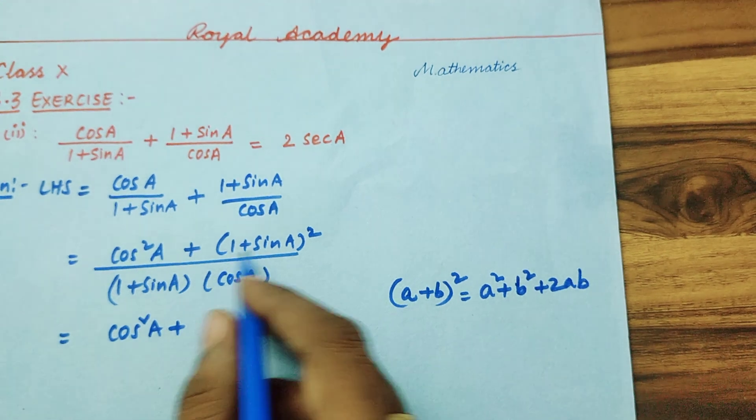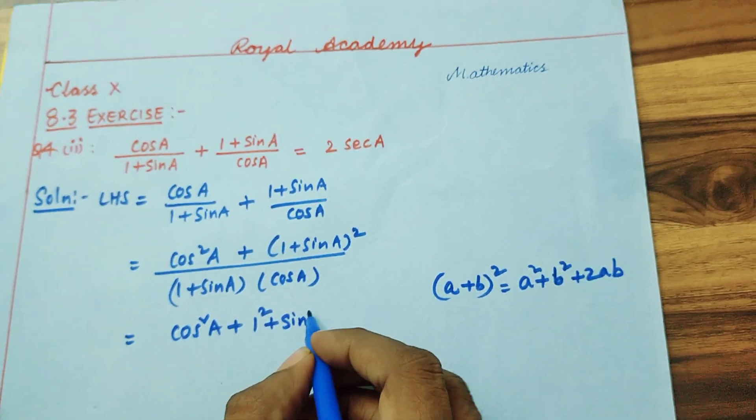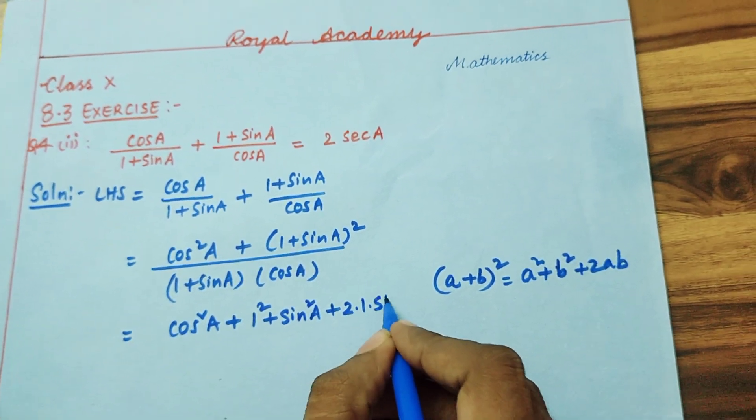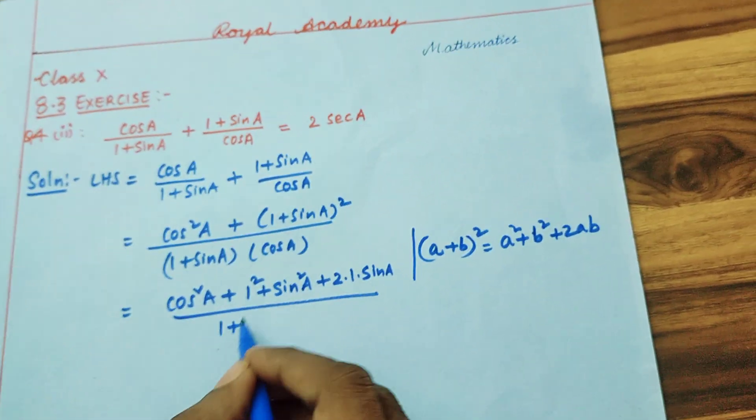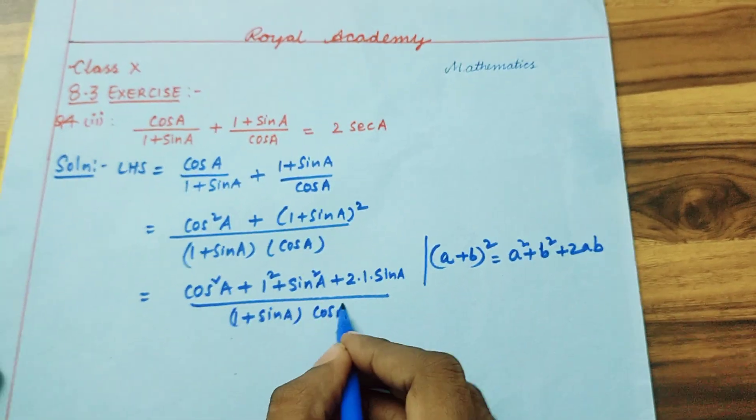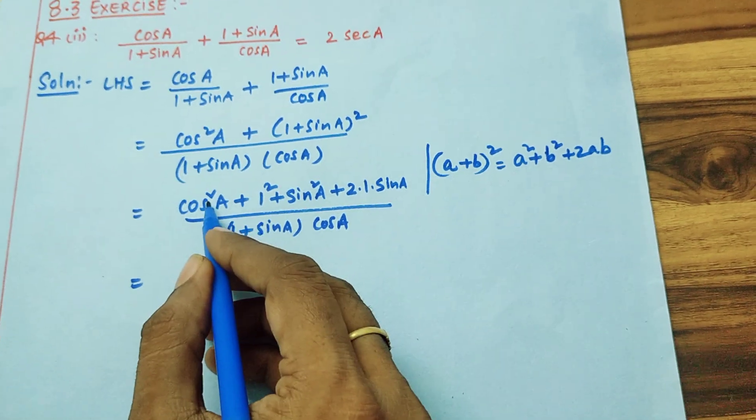Now, if I am expanding this I will get 1 square plus sin A whole square, that is nothing but sin square A, plus 2 into 1 into sin A by 1 plus sin A into cos A. Here you can see cos square A.